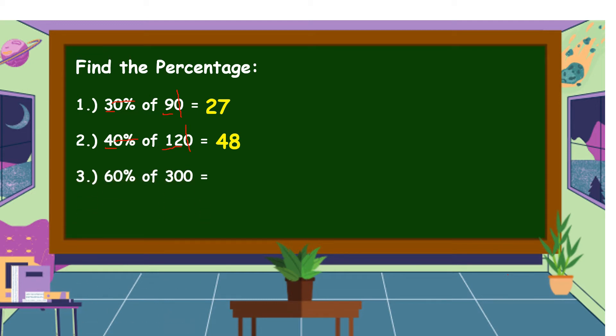Another example, 60% of 300. Okay, what is your answer? Alright, the answer is equal to 180. Omit 0 and the percent sign, then cancel 1 0 in 300. Multiply 6 and 30, and the answer is equal to 180.